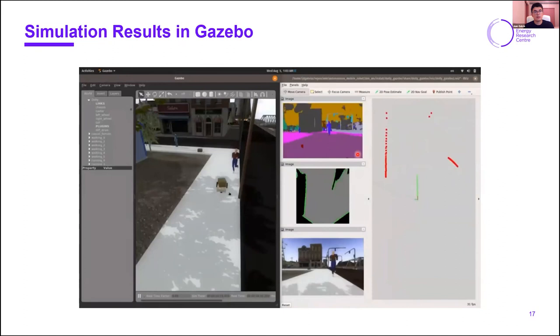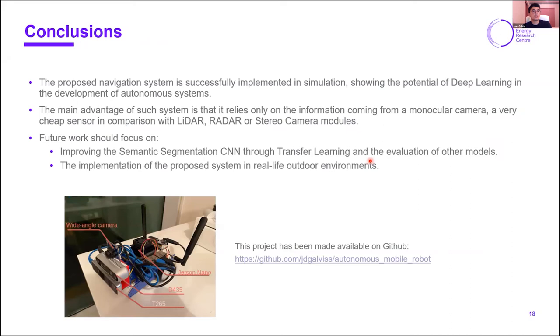What we can conclude from this work is that the proposed navigation system was successfully implemented in simulation, showing the potential of deep learning in the development of autonomous systems. It's important to mention that the main advantage of such a system as the one proposed is that it relies on the information coming from a monocular camera, which is a very cheap sensor in comparison with LiDAR, radar, or stereo camera modules.